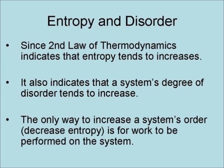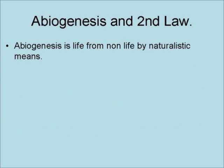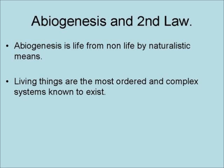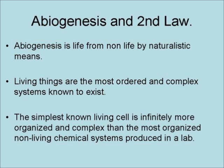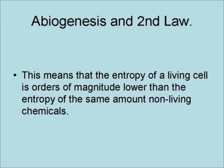The only way to increase a system's order — that is, decrease its entropy — is for work to be performed on the system. Abiogenesis is life from non-life by naturalistic means. Living things are the most ordered and complex systems known to exist. The simplest known living cell is infinitely more organized and complex than the most organized non-living chemical systems produced in a lab. This means that the entropy of a living cell is orders of magnitude lower than the entropy of the same amount of non-living chemicals.